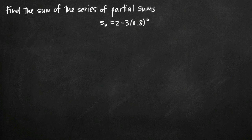Today we're going to be talking about how to find the sum of the series of partial sums. In this particular problem, we've been given the series of partial sums s sub n is equal to 2 minus 3 times 0.8 raised to the n power.